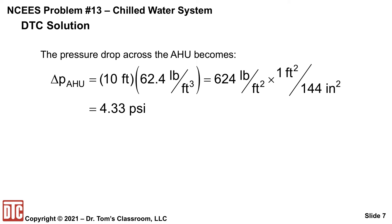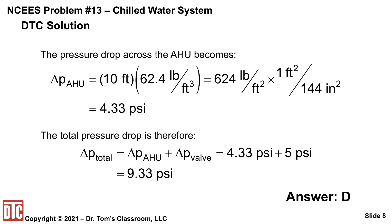And this is given in 10 feet of water. So you've got 10 feet times 62.4 pounds per cubic foot. So you get 624 pounds per cubic foot, which you need to convert to psi. And when you do that, you get 4.33 psi. And so just add the 5 psi for the valve and you get 9.33 and that's answer D.